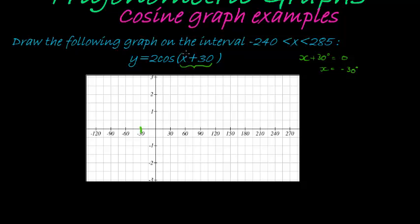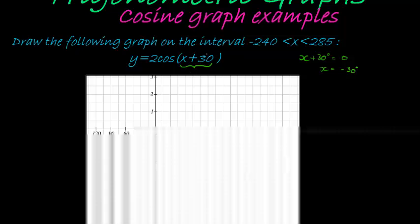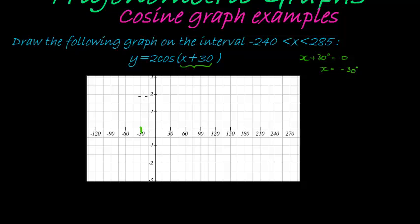If x is negative 30 degrees, then negative 30 plus 30 is 0, that was the idea to make it 0. Cos of 0 is equal to 1, and 2 times 1 is equal to 2, so that will be my starting point.